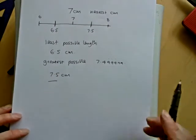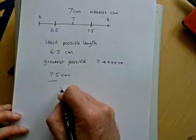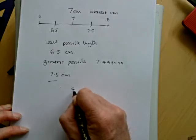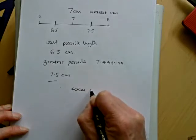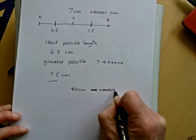What about if we round it to, say, the nearest 10 centimeters? So let's say I've measured something. Say I've measured a book, and I say the book is 40 centimeters to the nearest 10 centimeters.